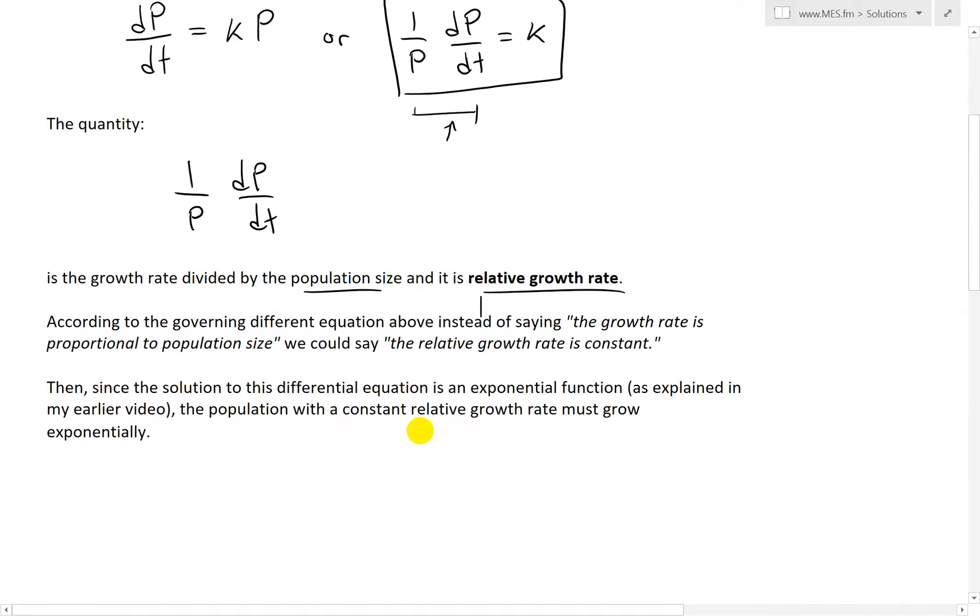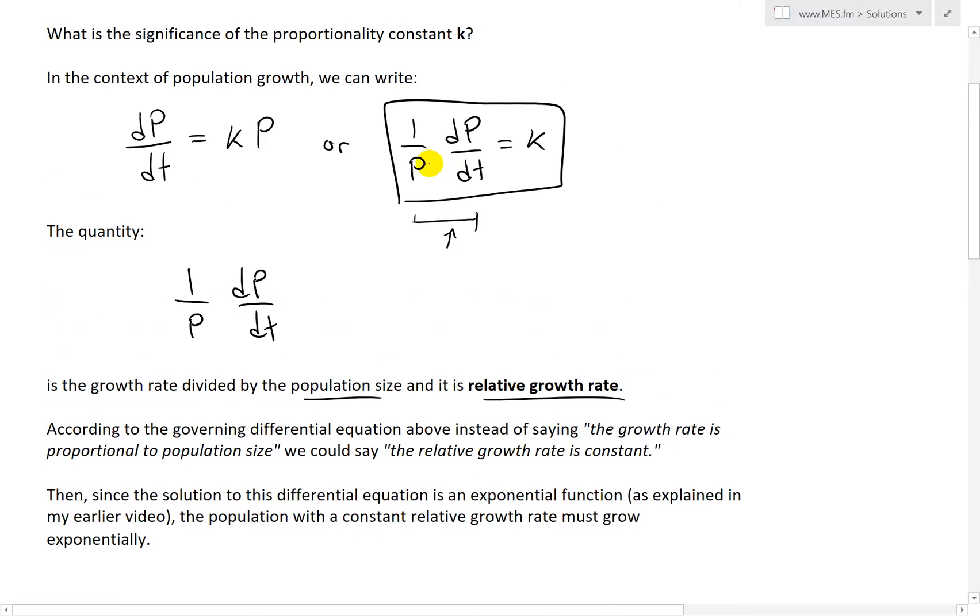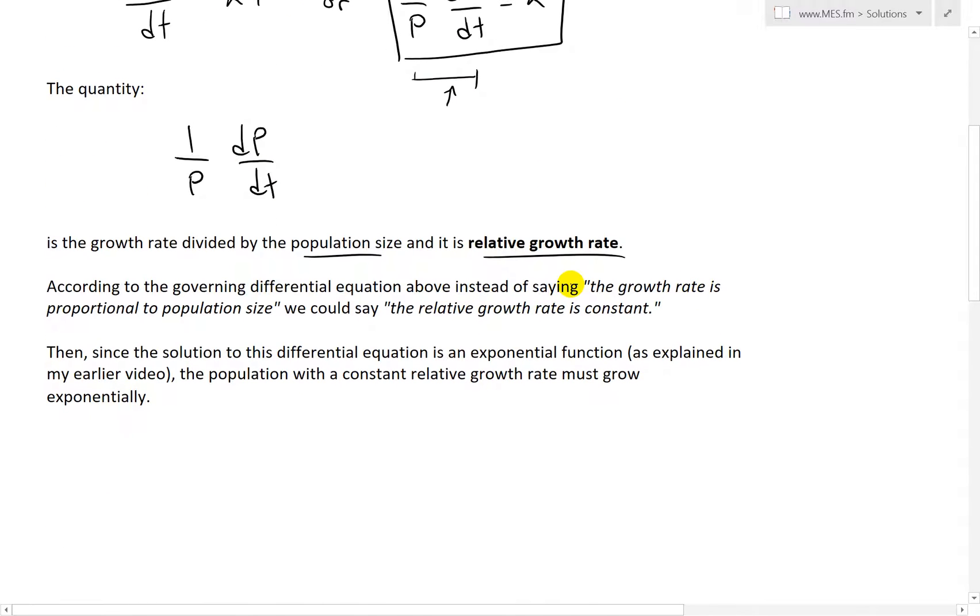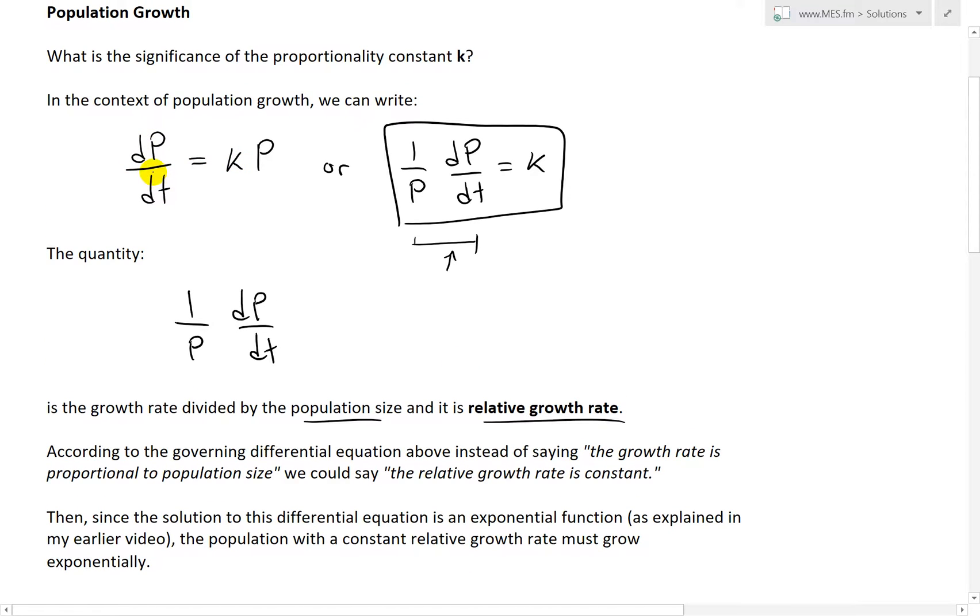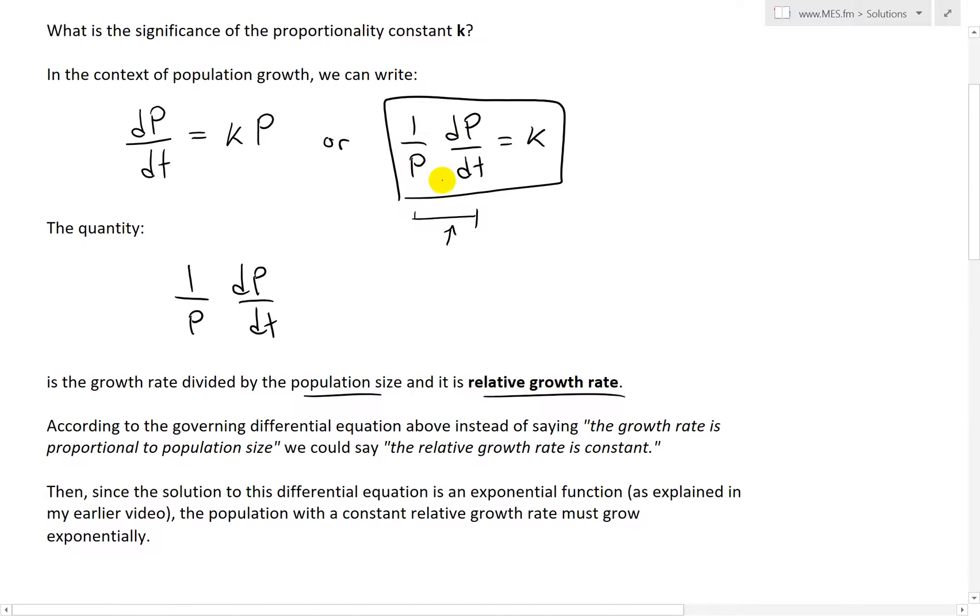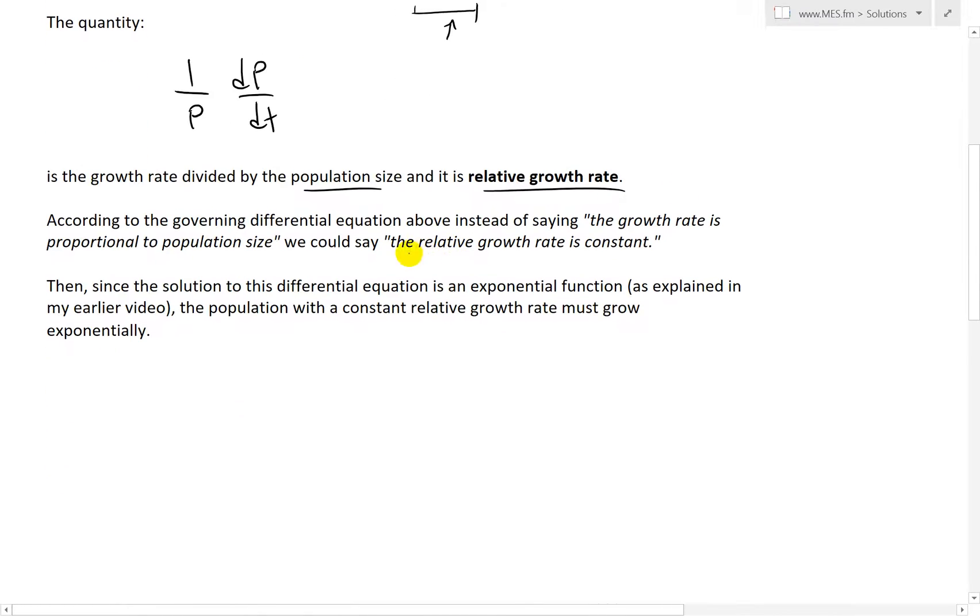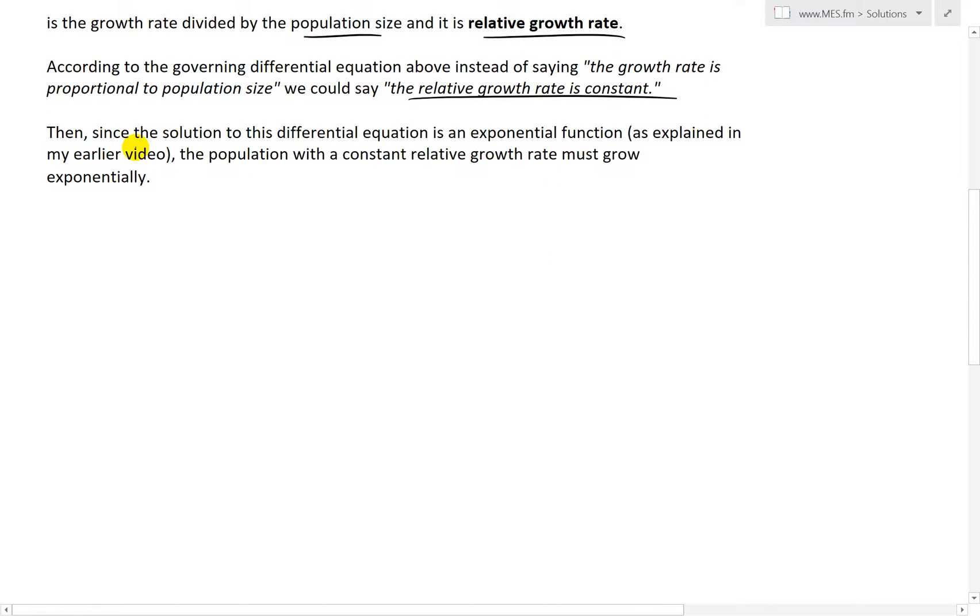According to the governing differential equation above, instead of saying the growth rate is proportional to population size, we could say the relative growth rate is constant, and that's our constant k. So that's another way of saying this governing differential equation. Since the solution to this differential equation is an exponential function, as explained in my earlier video,